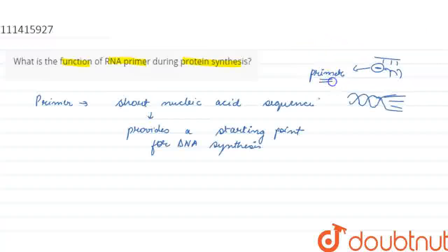Primer already synthesized hoti hai hamari body mein, and ye primer kya karta hai - phir uske baad yahan pe jab DNA replication start hogi, yahan pe complementary nitrogen base pair pe attach hoti hai, and then uske aage further nucleotides attach hoti hai, chain form hoti hai.